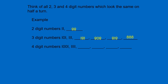888 looks the same. Now 4 digit numbers: 1001, 1111. Let us see the other 4 digit numbers — 1881. It looks the same after half a turn. 8008 also looks the same after half a turn.